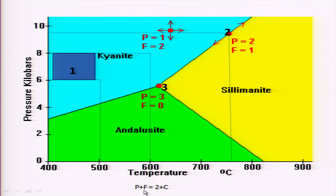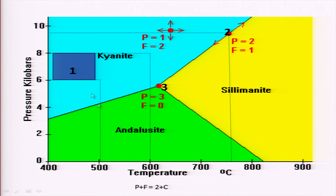So we have degree of freedom F = 2, phases P = 1, giving 2 + 1 = 3, and on the other side we have C = 1 component, so 2 + C = 3. To balance the relationship, we define it as P + F = 2 + C. We can thus define the changes — or lack of changes — in system area 1 by the relationship P + F = 2 + C.